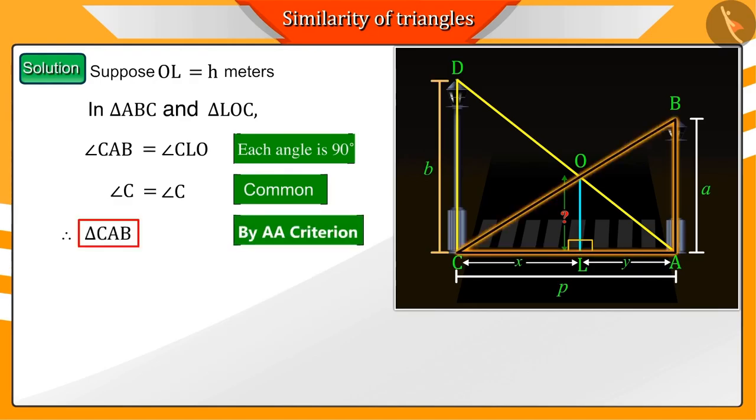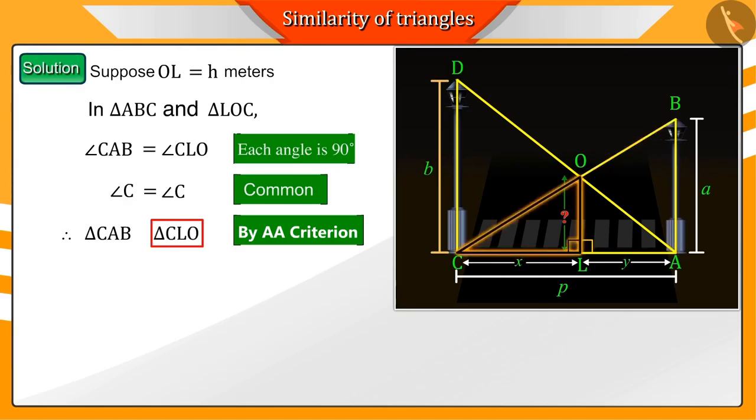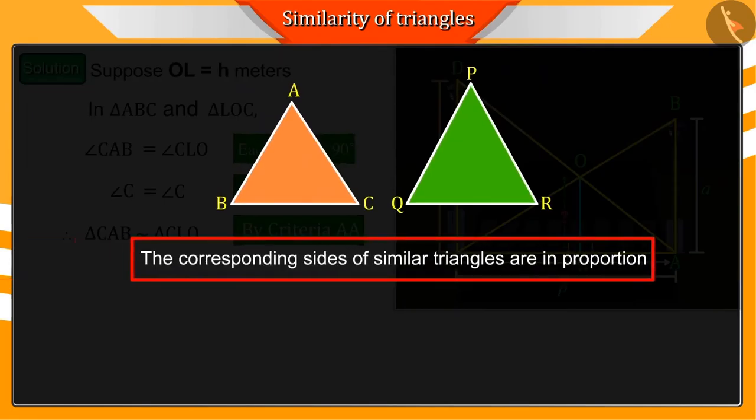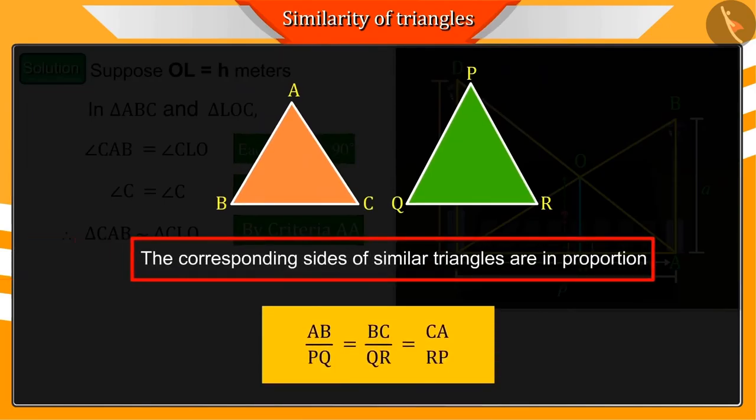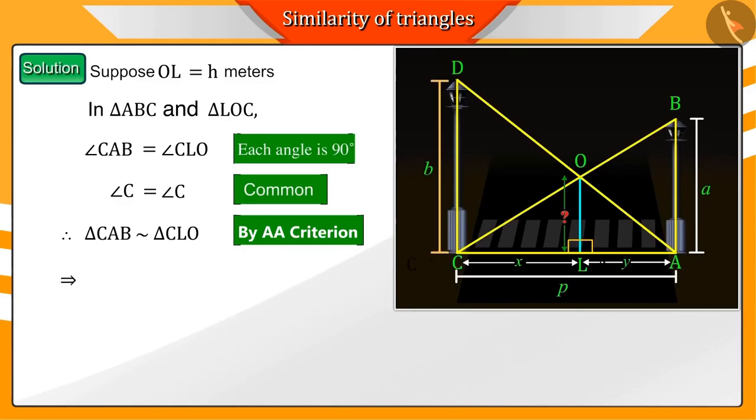We already know that the corresponding sides of similar triangles are in proportion. That means CA and CL and AB and LO are proportional to each other. Substituting all the known values and solving them we get equation one.